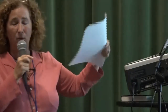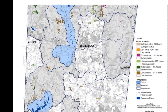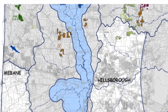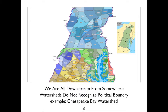Water doesn't stay within a political boundary. This is Hillsborough, North Carolina — the blue is the water area and the spots all around it are where sludge is spread. The Chesapeake Bay watershed covers five states — Pennsylvania, Maryland, Delaware, and others. You're not going to clean up the Chesapeake Bay watershed if you're not paying attention to where the sludge is spread. Two of the most permitted sludge sites in Pennsylvania are on that map.